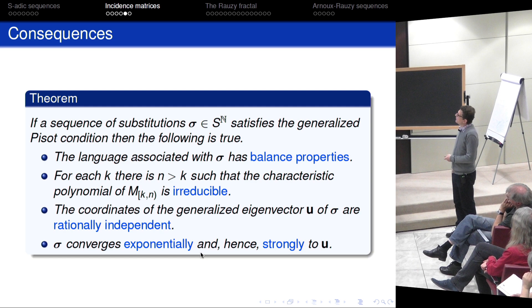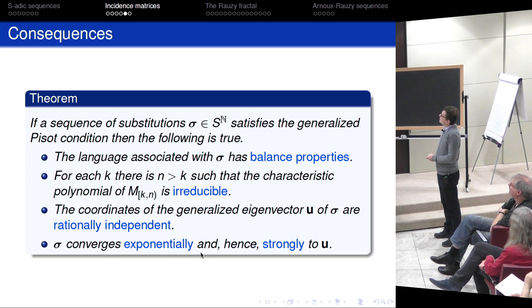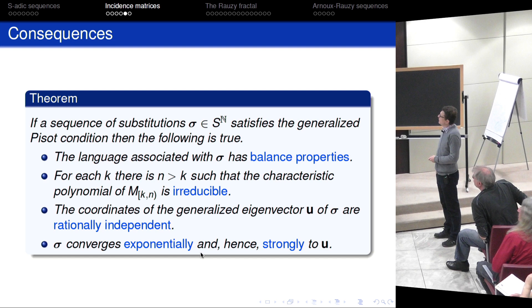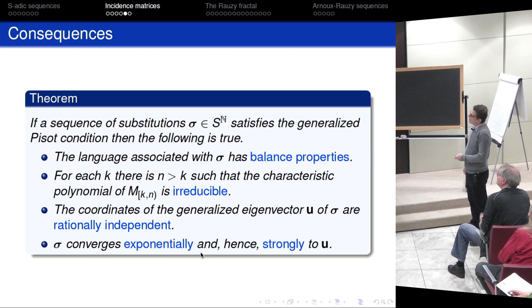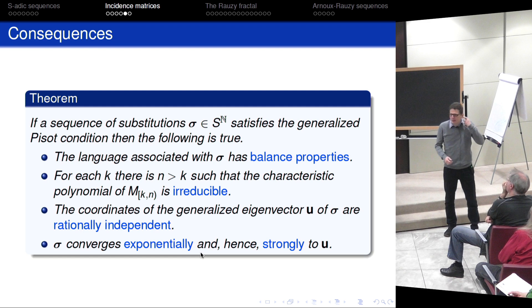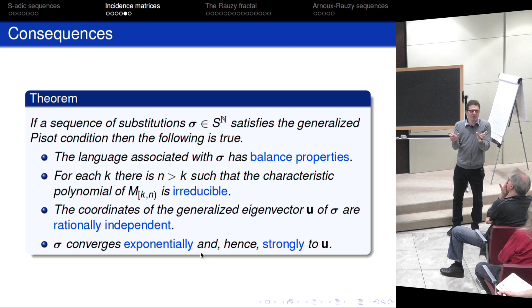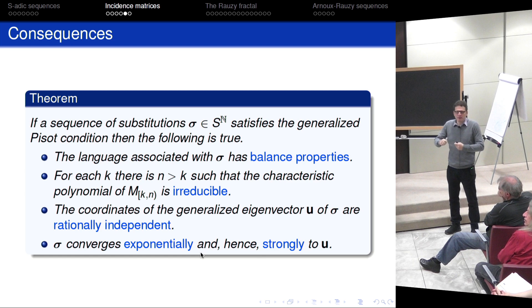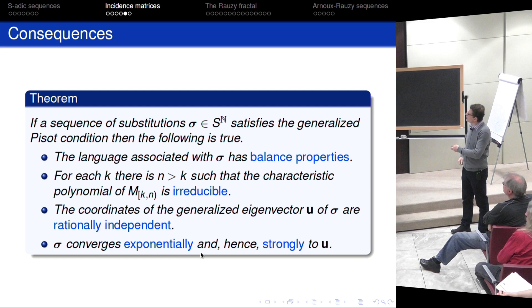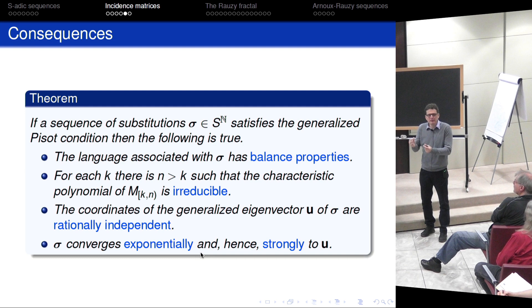If our sequence of substitutions satisfies the generalized Pisot condition and is primitive, then the language associated with sigma has balanced properties: if you take two words of the same length, the number of occurrences of each letter in both sequences is roughly the same. Geometrically, this implies our broken line stays at bounded distance of the direction u, which assures us the Rauzy fractal is compact. The second consequence is that for each k there is n > k so that the block from k to n is irreducible — important because it implies the coordinates of the generalized eigenvector u are rationally independent.